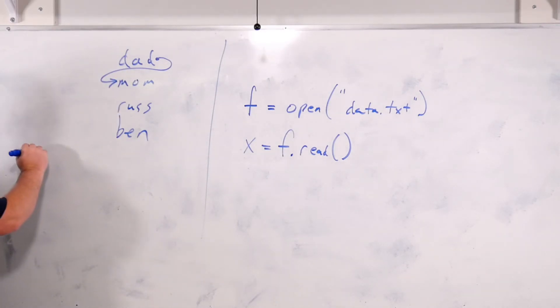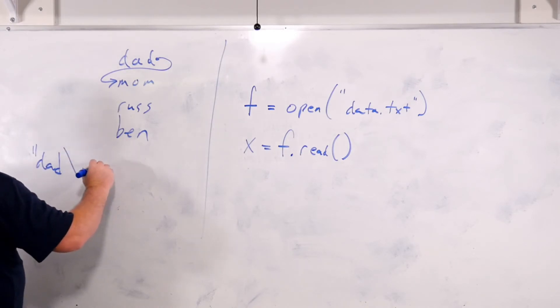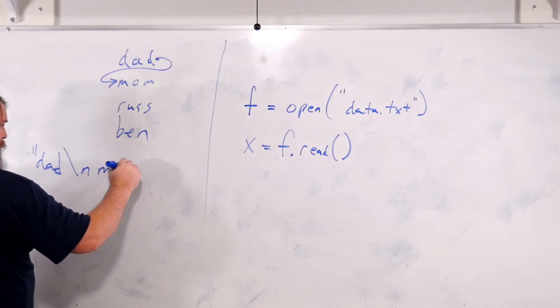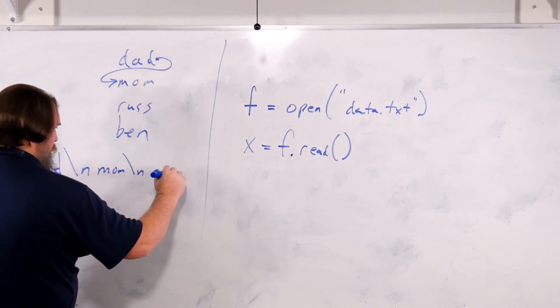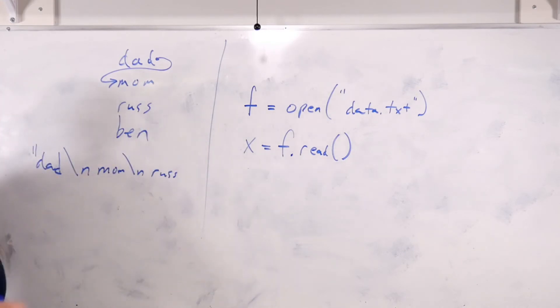what you get is the string dad, new line, mom, new line, Russ, and so on.